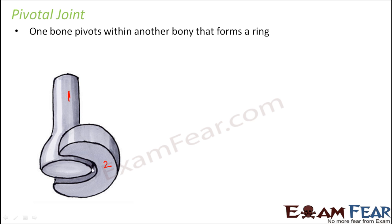Bone number 1 can actually slide over this bony ring-like structure. Now this ring is not a complete ring, so this half ring can easily be covered by the first bone. Therefore it can actually move or slide over this ring, which allows a rotatory movement around a single axis. Around this axis it can actually move back and forth, so the moving bone rotates within this ring.